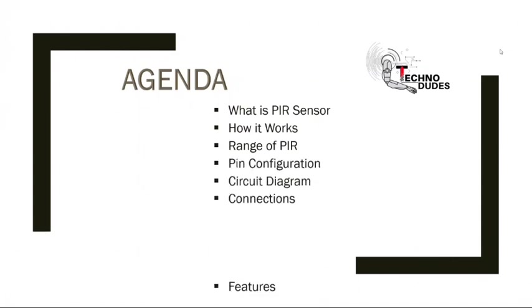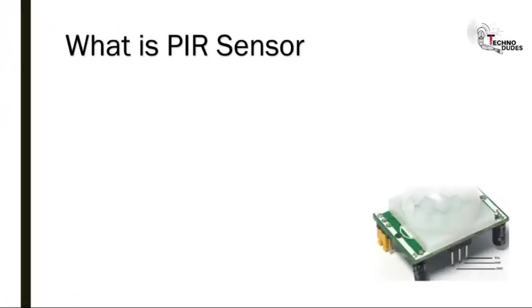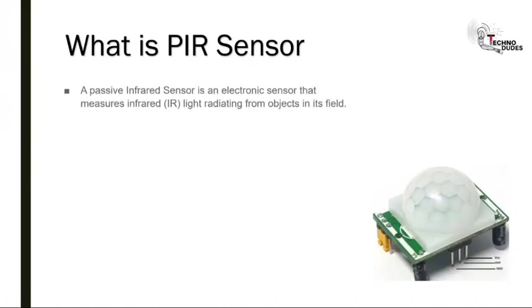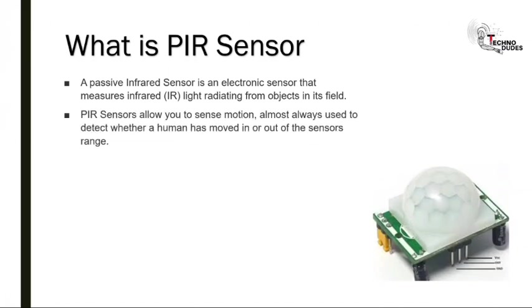A PIR sensor (Passive Infrared Sensor) is an electronic sensor that measures infrared light radiating from objects in its field. It allows you to sense motion and is used to detect whether a human has moved in or out of the sensor range.